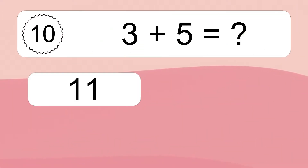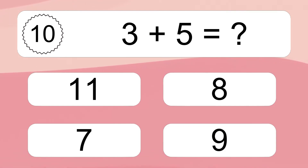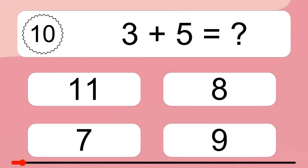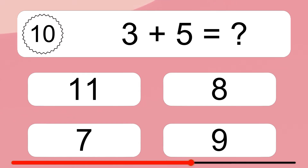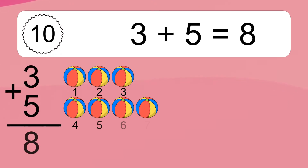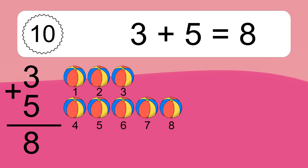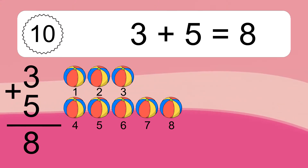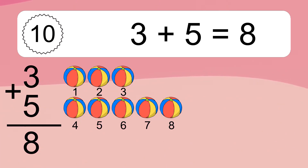3 plus 5 equals what? 3 plus 5 equals 8. Let's count it: 1, 2, 3, 4, 5, 6, 7, 8.